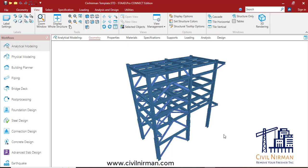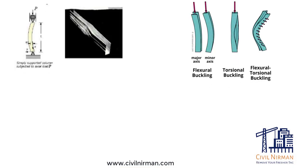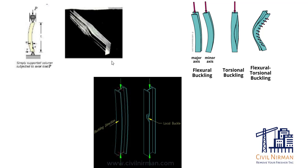For compression member failure, there are three categories of buckling. The first is flexural buckling, also called Euler buckling, where members are subjected to bending or flexure when they become unstable. The second is local buckling, which occurs when thin parts of a section buckle locally in compression before other modes can occur. The third is torsional buckling, where the column fails by twisting or a combined effect of torsion and flexural buckling.